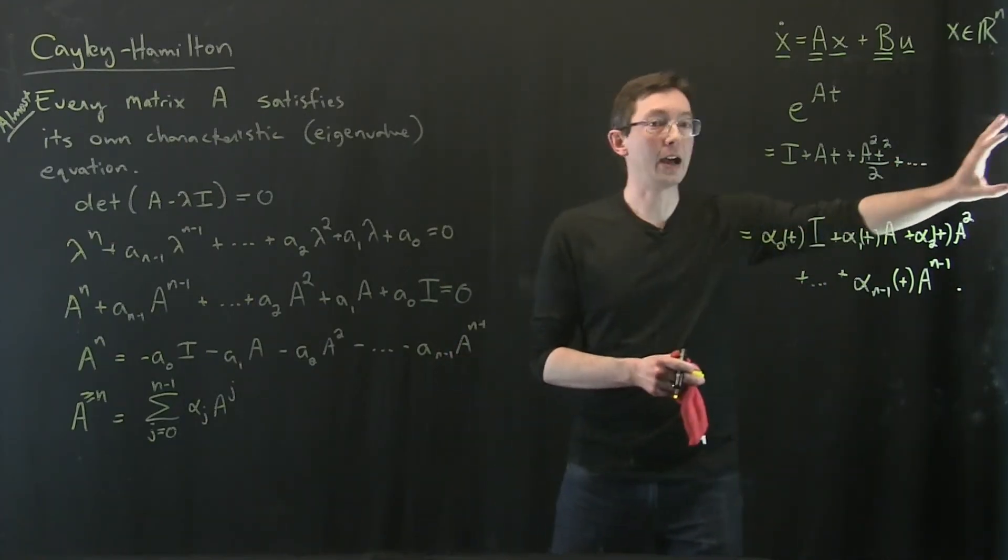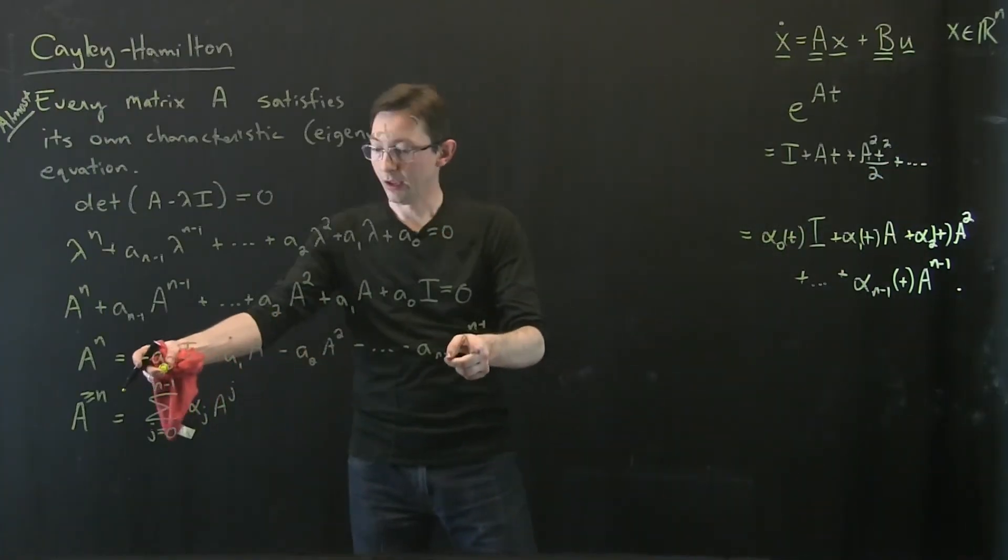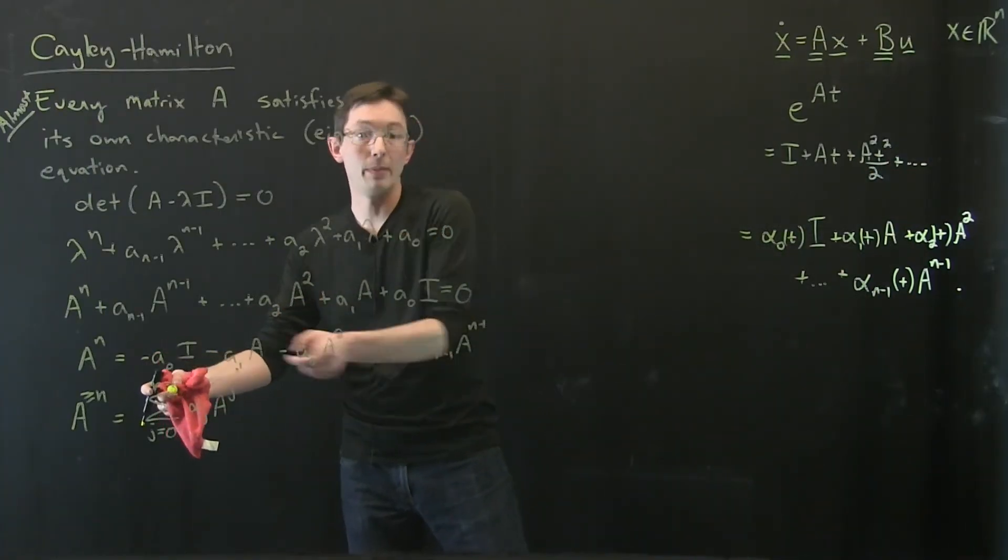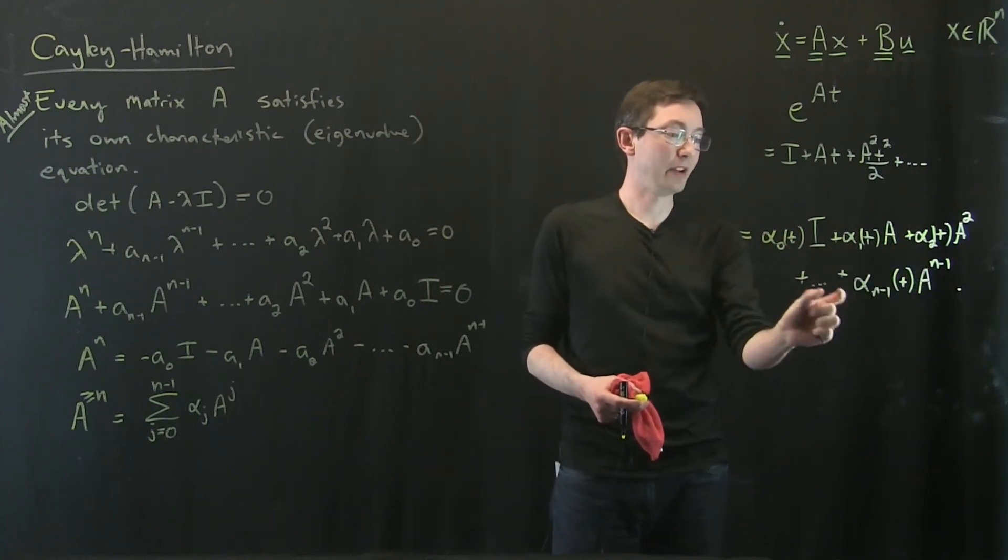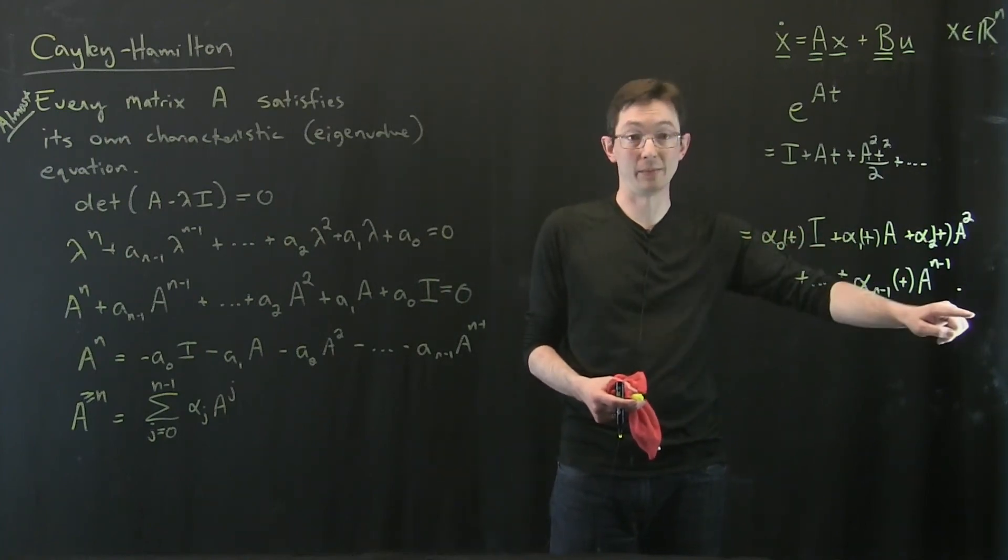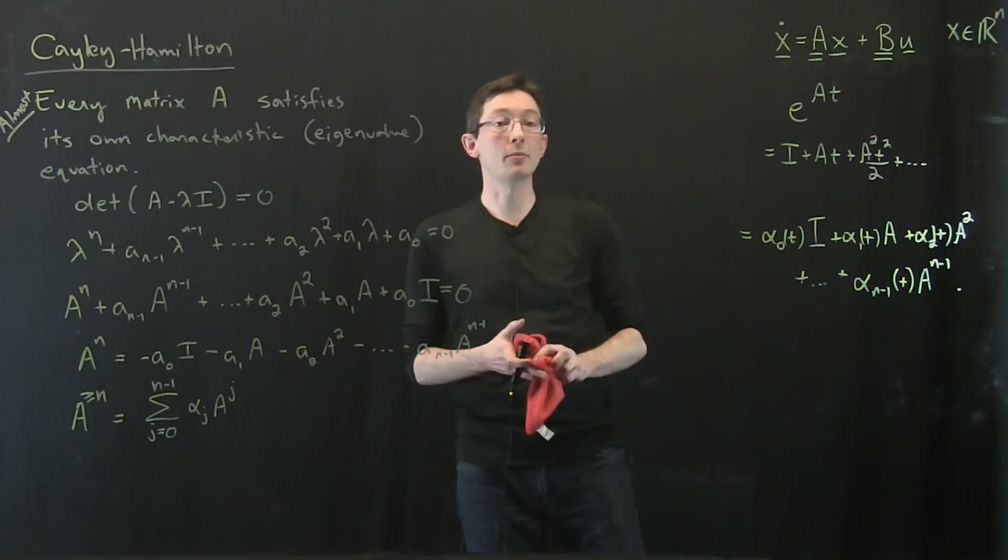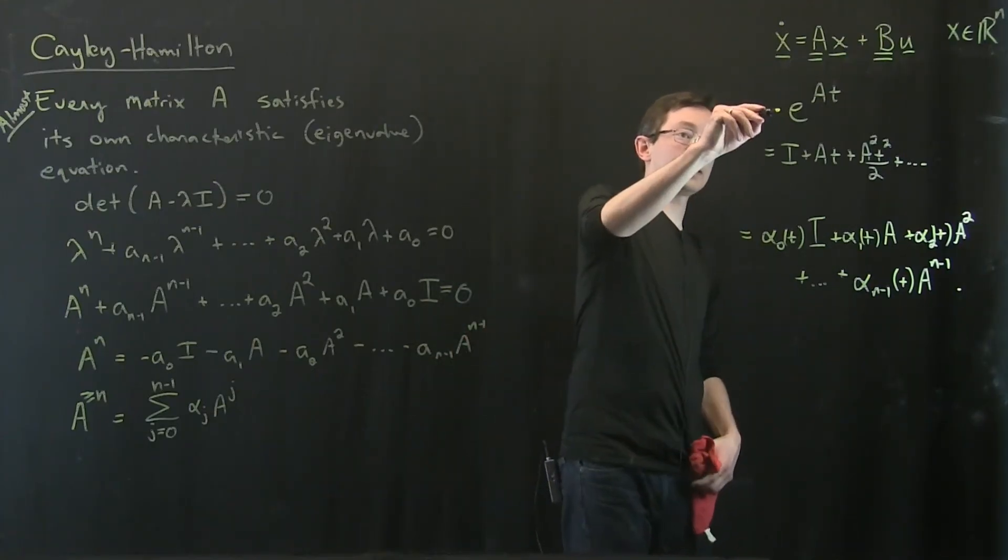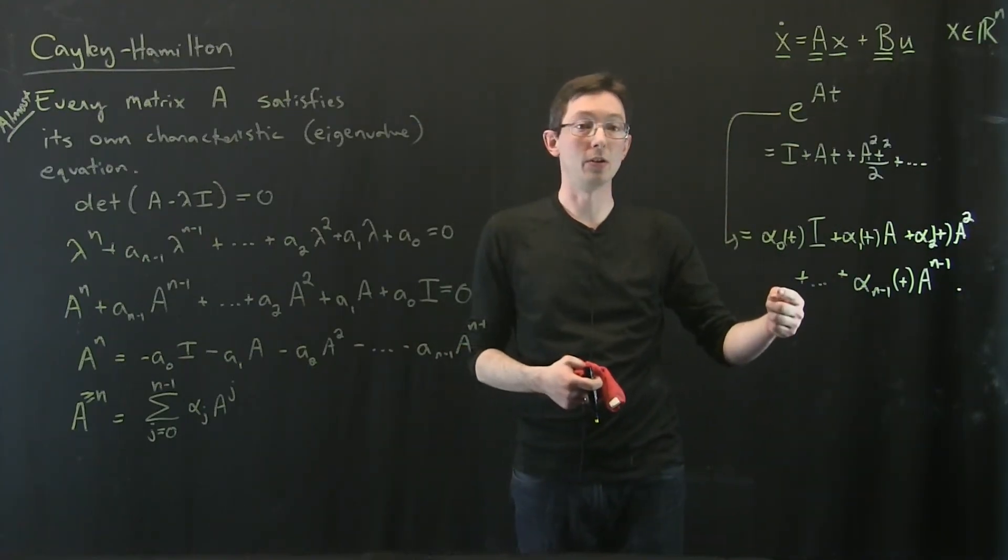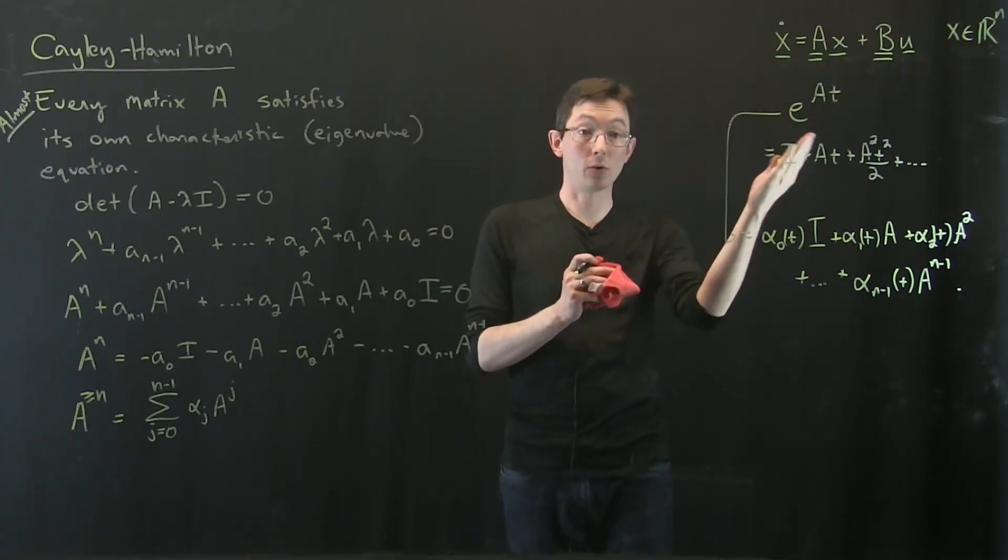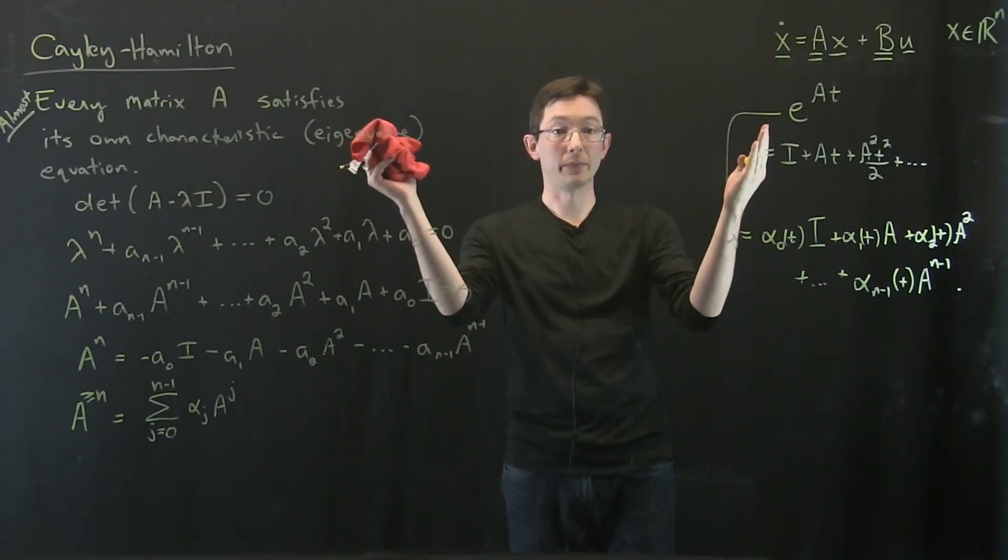So I've taken all of the higher terms and I've written them in terms of these coefficients of lower powers of A and I've essentially boiled those down into time varying coefficients of these basis matrices. Now this is really remarkable because this finite sum representation of E to the A T is going to allow us to show the equivalence of controllability and reachability.